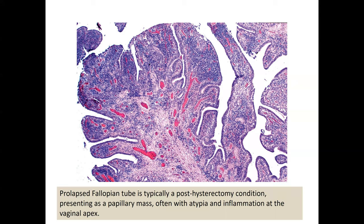Occasionally, a prolapsed fallopian tube can enter into the differential. An inflamed fimbriated end of the fallopian tube may occur in a patient who had a vaginal hysterectomy, where a fragment of the tube ends up adherent or involved in the healed surgical scar. This can become inflamed and look like a neoplasm or other lesion at the vaginal apex.